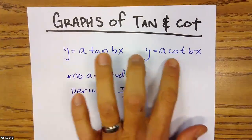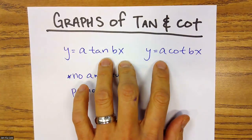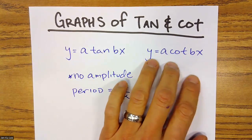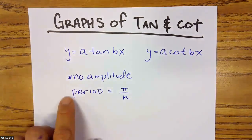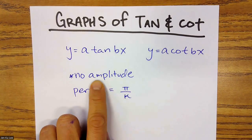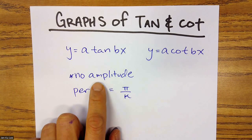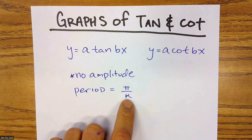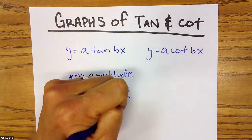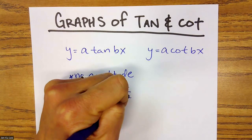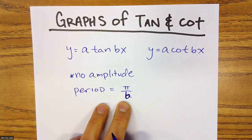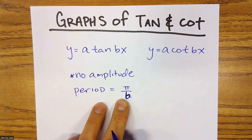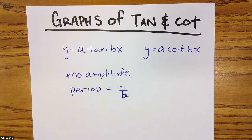The basic breakdown of tangent and cotangent: y equals a·tangent of bx, and y equals a·cotangent of bx, and there is no amplitude. When we graph it, you will see why there's no height to this graph. The period is a little different — it's period equals π over b, not 2π over b. I'll explain why in a little bit.